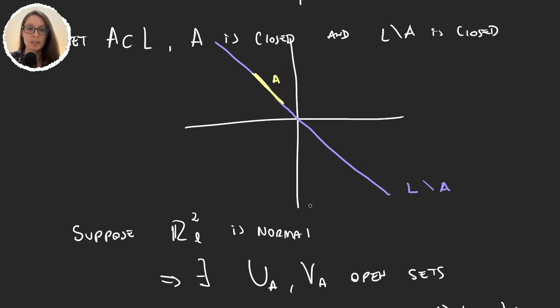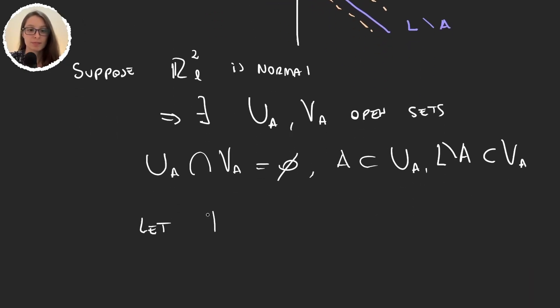Let's say that A is contained in UA and L minus A contained in VA. So what we're saying is that there will exist here in RL squared some set UA and a set VA. Let's say that VA will be the union of these two things that are disjoint. Now let's continue thinking about a particular set.